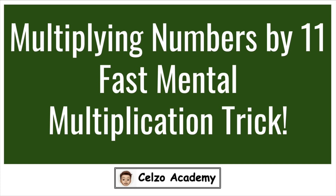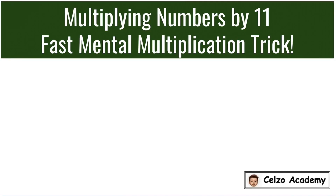It is a cool thing and it's helpful to know some math tricks. So today I will be teaching you how to multiply numbers by 11 the fastest way. Let's begin with 32 times 11, and doing this mentally the answer is 352.